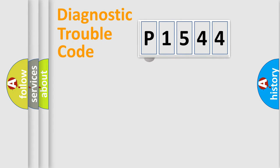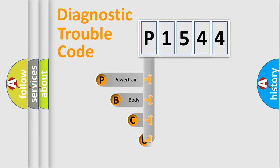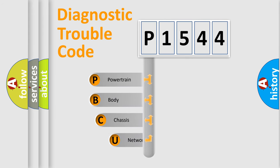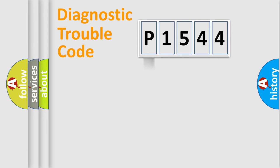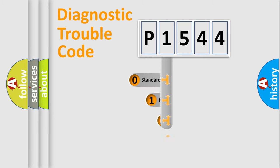First, let's look at the history of diagnostic fault code composition according to the OBD2 protocol. We divide the electric system of an automobile into four basic units: powertrain, body, chassis, and network. This distribution is defined in the first character of the code.